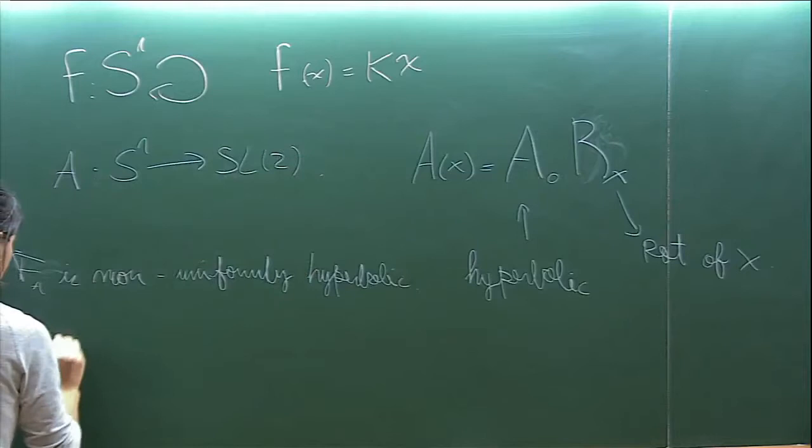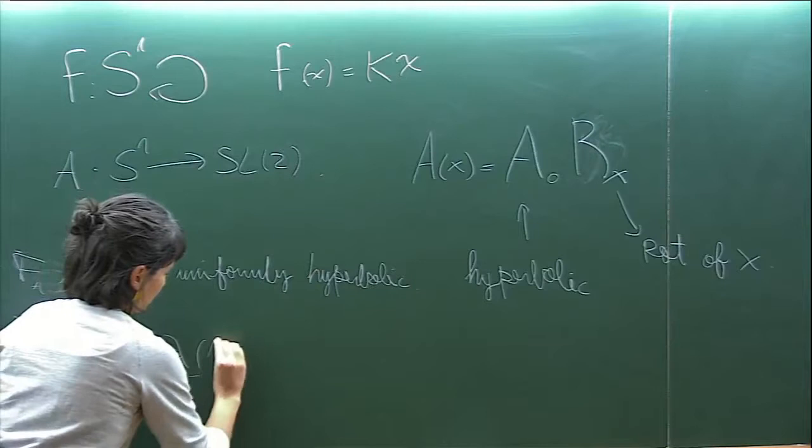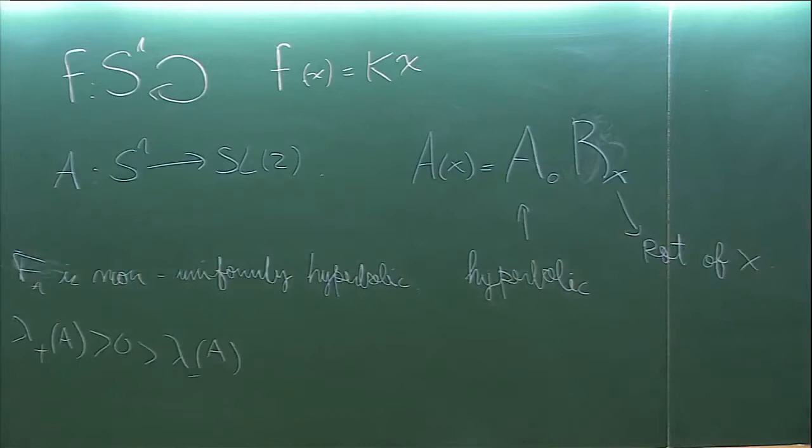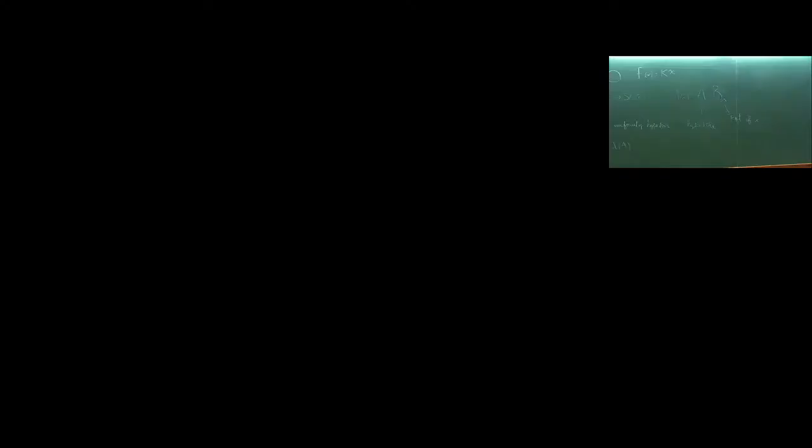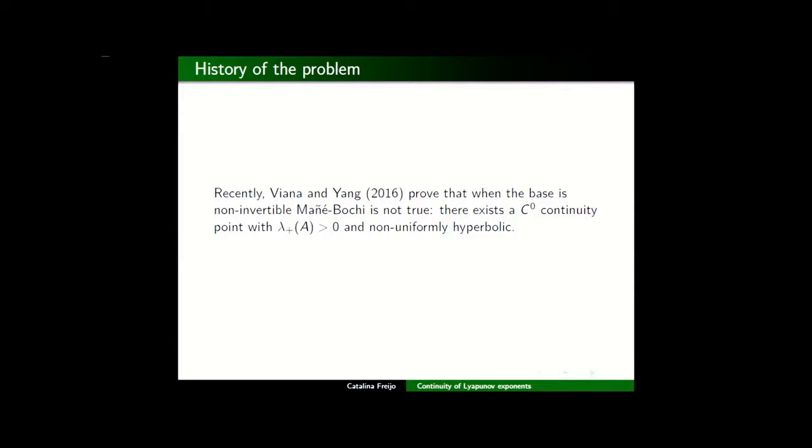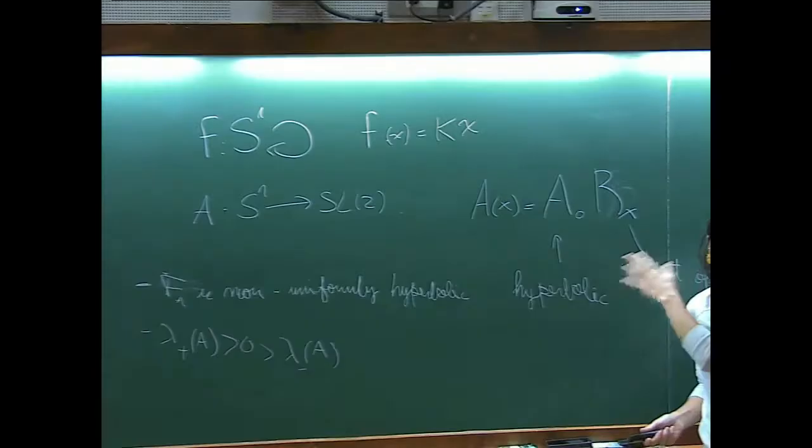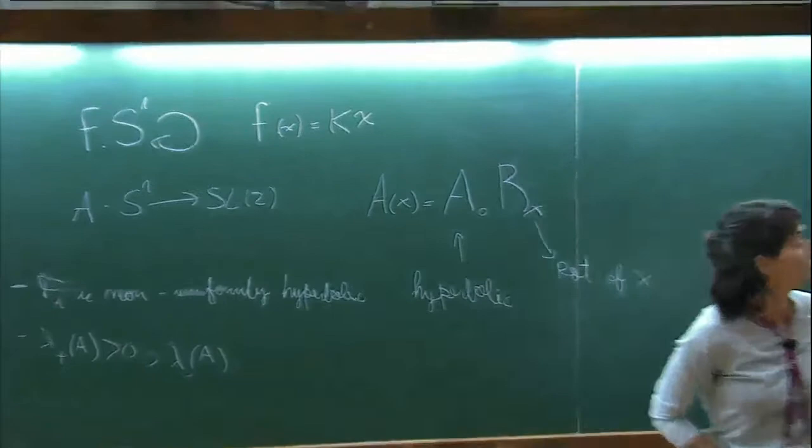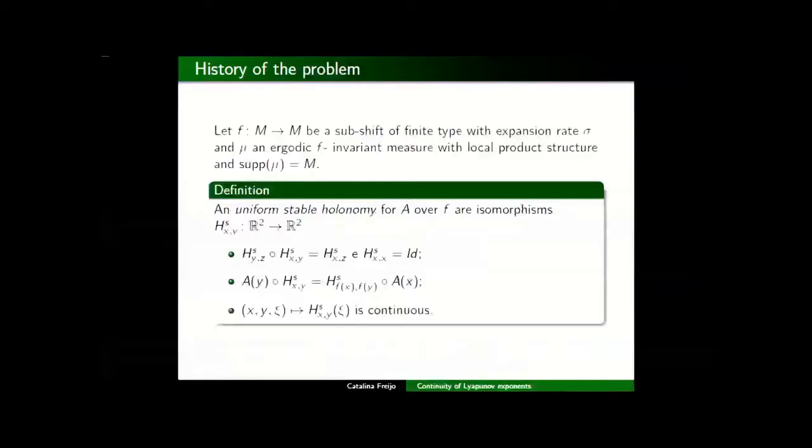This is non-uniformly hyperbolic. And they prove in this article that the Lyapunov exponents of this was different from zero. I believe that the initial motivation for this result was an example of Yang that's really old. So in this example, what is the question? The question is, why doesn't Mañé-Bochi function in this kind of setting when the base is not invertible?